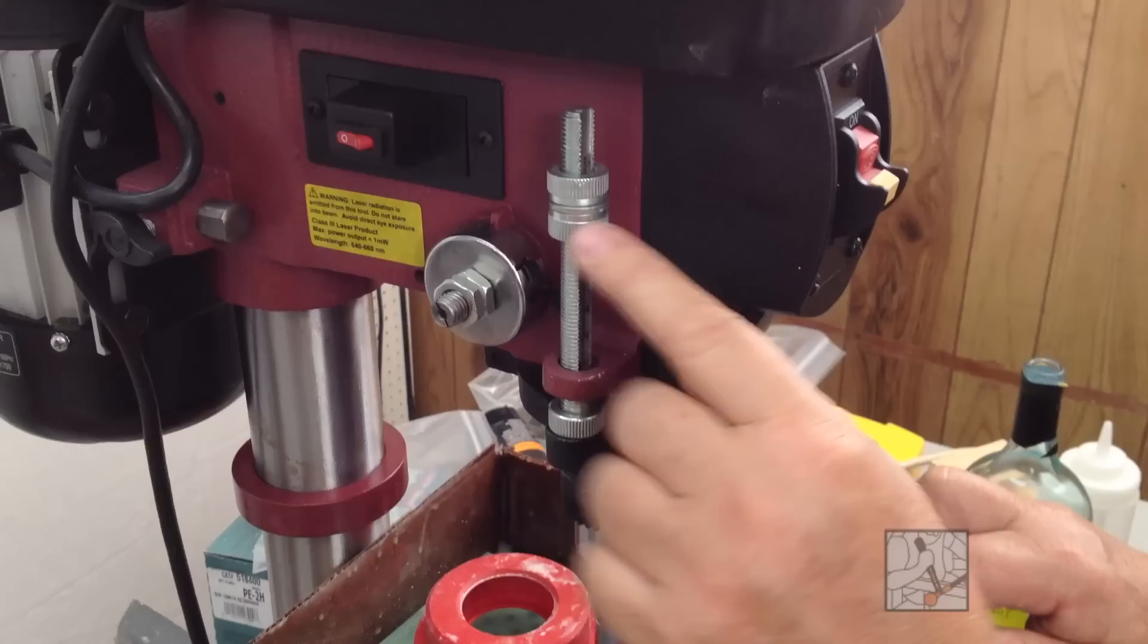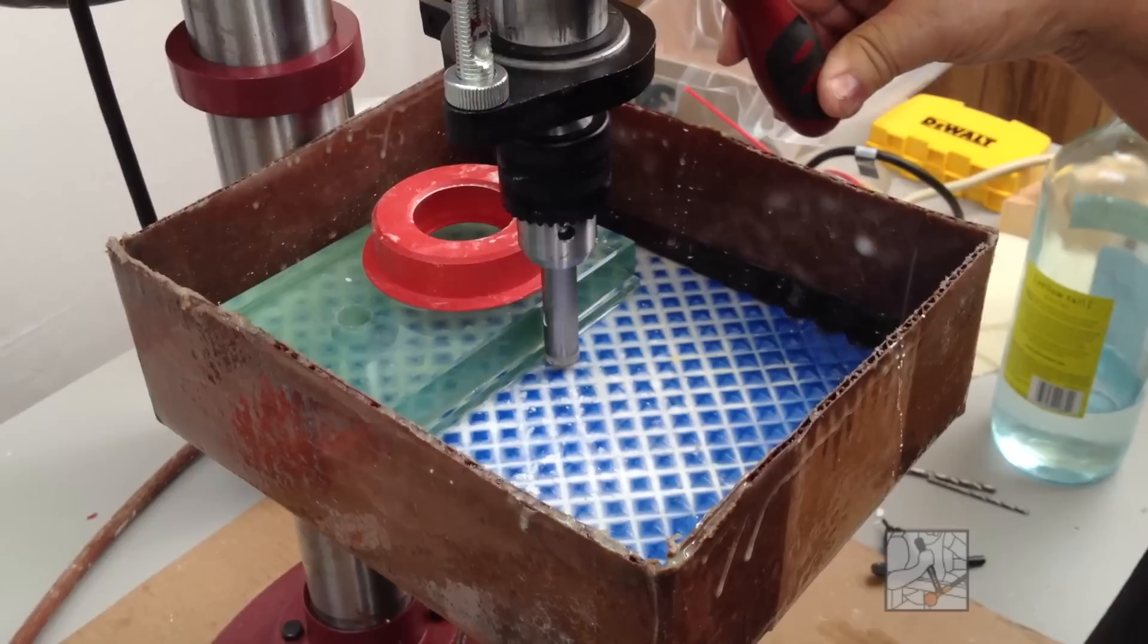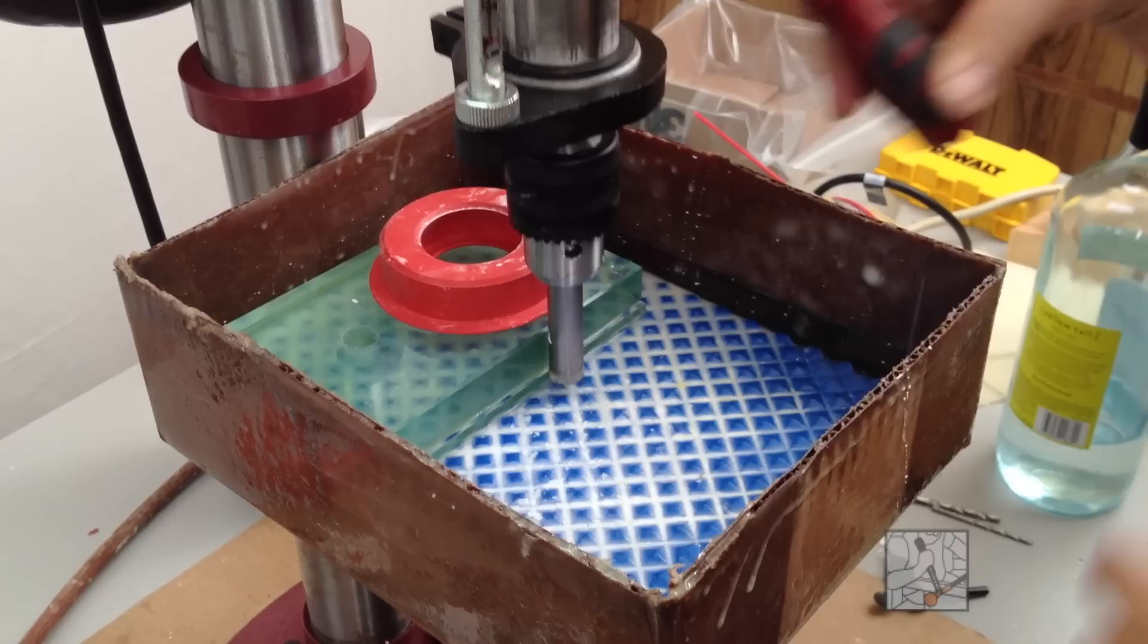This time, I'm going to do something different. I set my stop on the drill press, so that when I go through, I will go through my glass and just into the bottom piece of glass, so it won't blow out the back. It doesn't really matter if you blow out the back because you have this sacrificial piece of glass on there. But I just want to show you another way of controlling the drilling process.